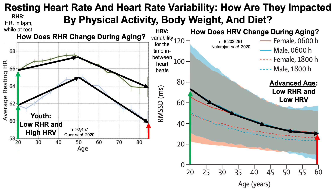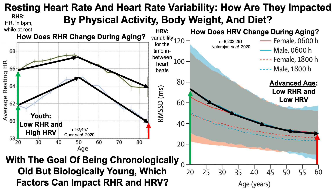In advanced age, both graphs show relatively low resting heart rate and also low heart rate variability. In contrast, youth is characterized by relatively low resting heart rate — at least compared with 50-year-olds — but also high heart rate variability. So with the goal of being chronologically old but biologically young, which factors can impact resting heart rate and heart rate variability? Today I'll go through data for physical activity, body weight, and diet.